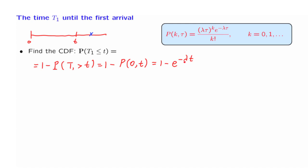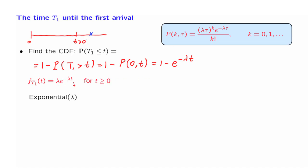We then take a derivative and find that the PDF of the time until the first arrival has the form of the PDF of an exponential random variable. Of course, this calculation is only valid for t's that are non-negative. For negative t's, the PDF of T1 is 0.